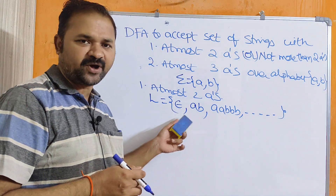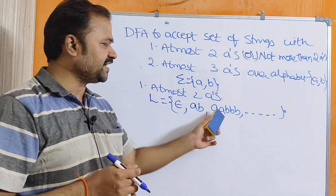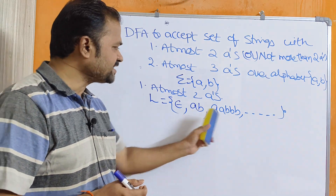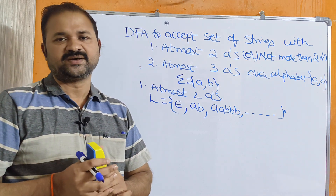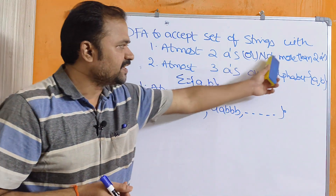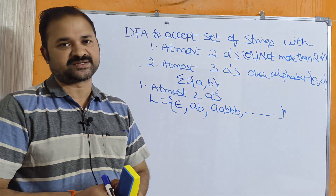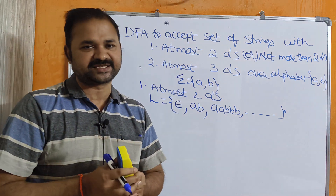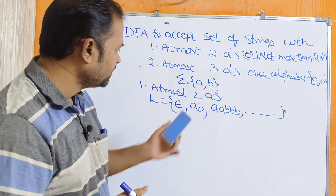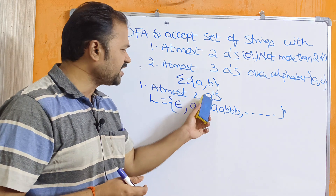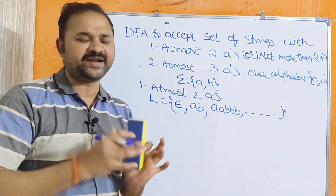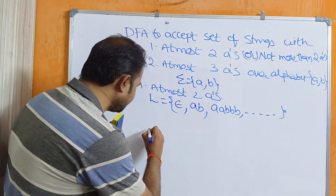In the first string we have 0 A's, the second string has 1 A, and the third string has 2 A's. There is no constraint on the number of B's — we can take as many B's as we want. That is nothing but not more than 2 A's. So how many states are needed here? Since the maximum is 2 A's, we will initially require 3 states.